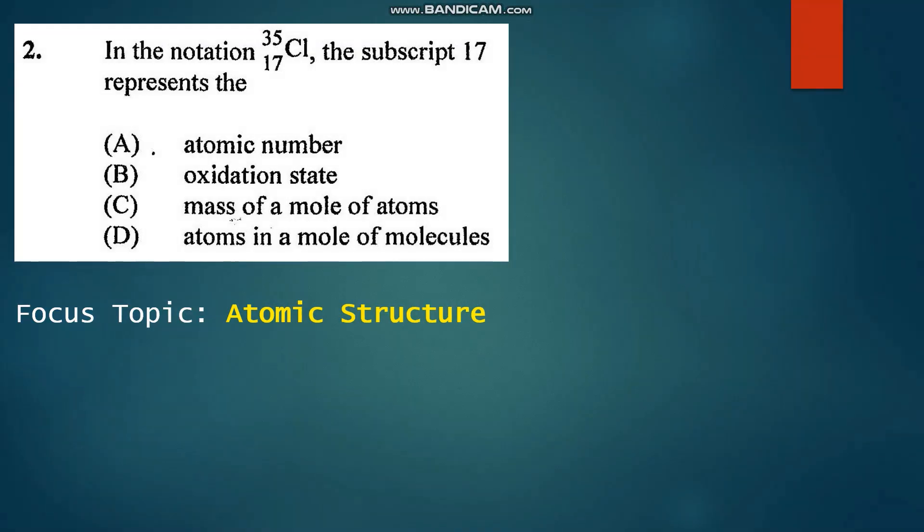Number two: In the notation 35, 17 Cl, the subscript 17 represents the... This is the representation of a nuclide, and in the representation of a nuclide the subscript represents the number of protons, which is the atomic number. So that's A.